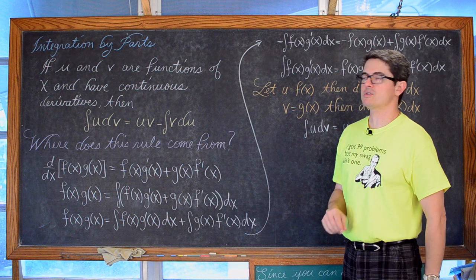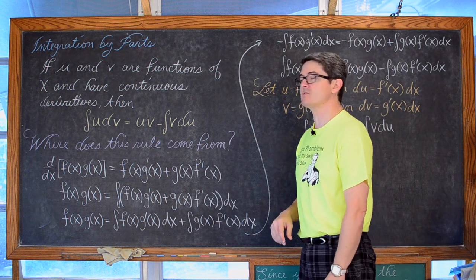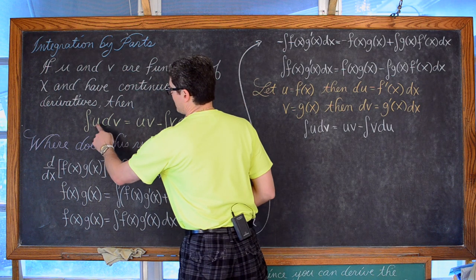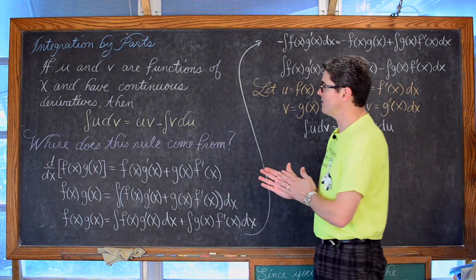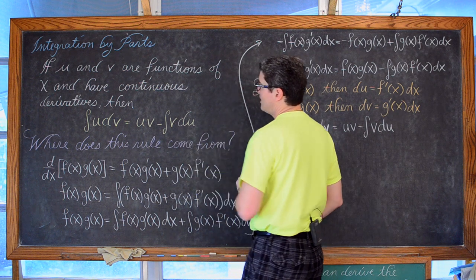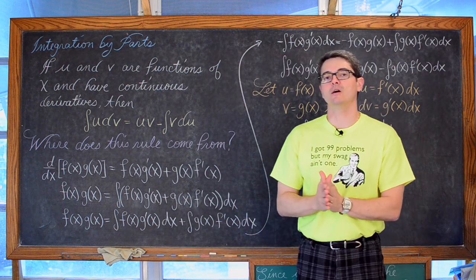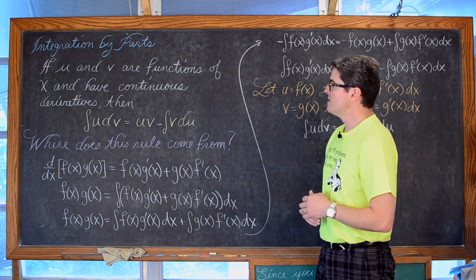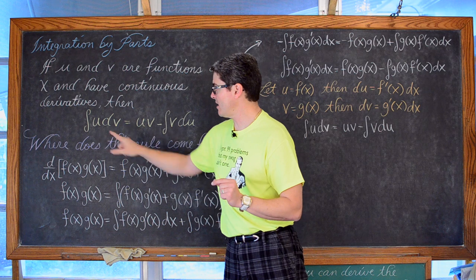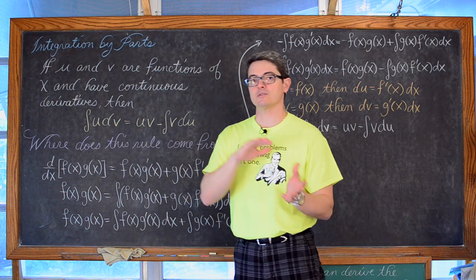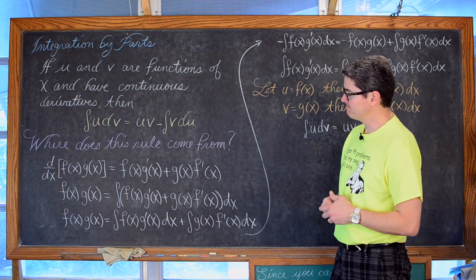So, integration by parts: if u and v are functions of x and have continuous derivatives, then the indefinite integral of u dv is equal to uv minus the indefinite integral of v du. Please note it says if u and v are functions of x — you are not going to see u's and v's in your problem. That is going to be up to you to say what factors of this integrand you are going to set u equal to, and the remainder will be dv.